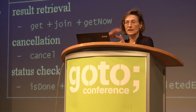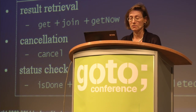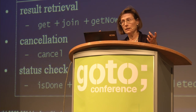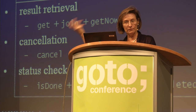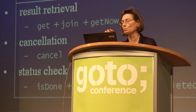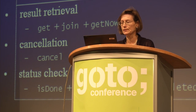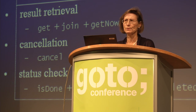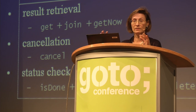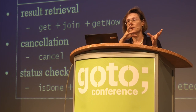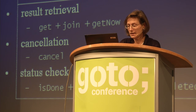It also supports the traditional Future methods like get, cancel, and isDone. Logical extensions include getNow, which returns immediately if the result is available (previously you had to call get with a very short timeout), and join, which is basically get without a checked exception — it wraps any exception into a RuntimeException instead of a checked ExecutionException. Cancel is a special case I'll address shortly.